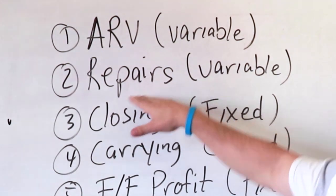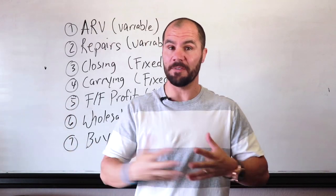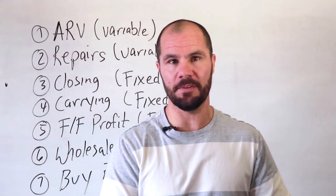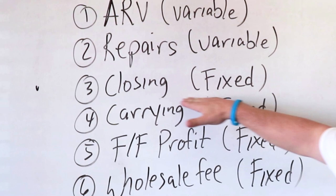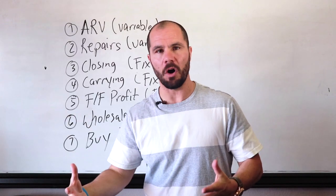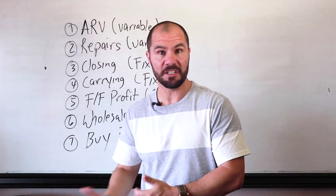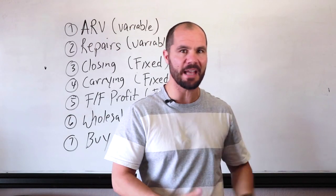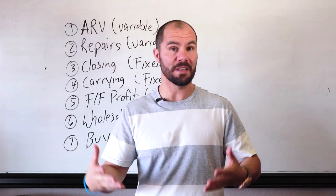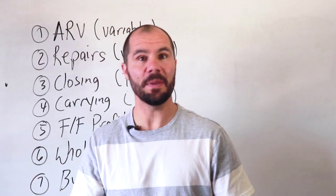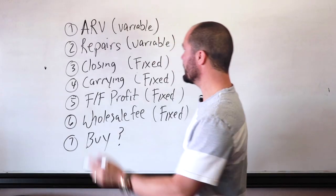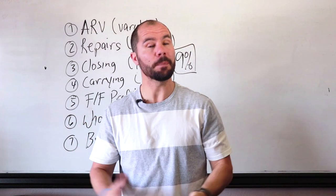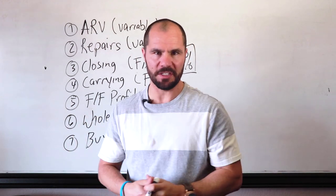Next we have our repair cost — how much is it going to cost to fix it up? This is also a variable because what needs to be fixed is different on every deal. Number three is our closing cost. This is all of the costs and fees that you pay to buy and sell a house, including settlement fees, title insurance, prorated taxes, transfer tax, and the biggest one: real estate commissions. I conservatively budget 9% of ARV to closing costs on every deal.